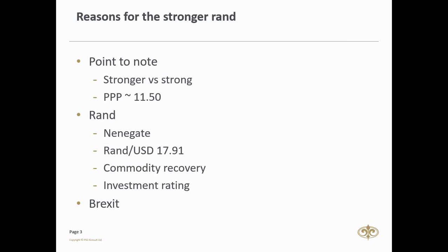The best way to measure where the Rand should be is by way of purchasing power parity, the PPP. This is an economic theory that compares different countries' currencies through a market basket of goods approach. Two currencies are in equilibrium when a market basket of goods is priced the same in both countries. Currently the PPP for the Rand against the dollar is roughly between 11.50, measured since 1994. If measured back to 1974, just after the oil crisis, the PPP is estimated at around 9.50 to the US dollar. So if the Rand was at or below 11.50, we could argue we have a strong Rand — but because it's not there, we say the Rand is stronger, having recovered from the worst levels of 17.91 at the end of 2015.